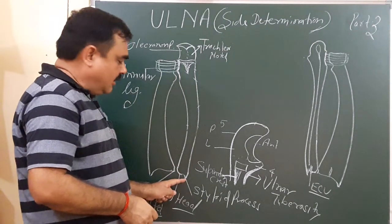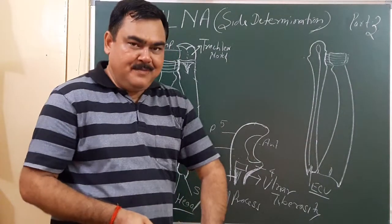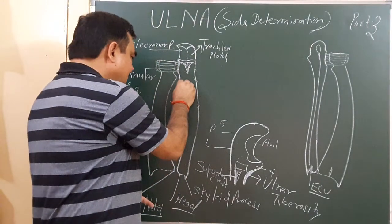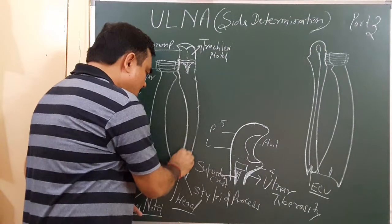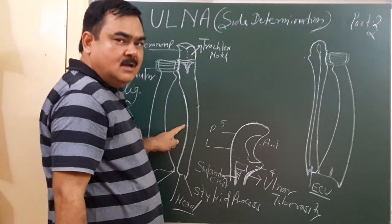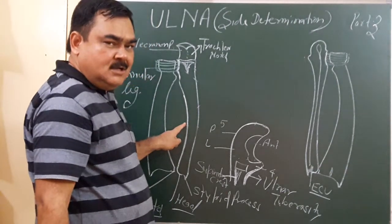The direction of the styloid process is posterior-medially. Second, this is the lateral border. It is the sharpest border and is also known as the interosseous border.